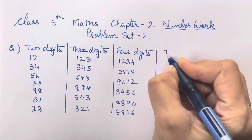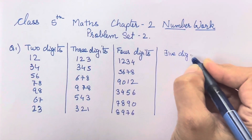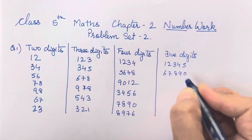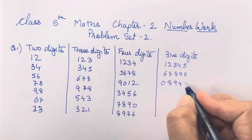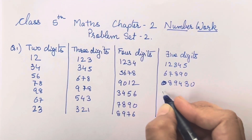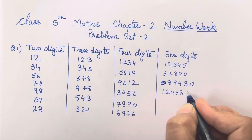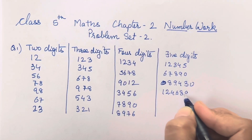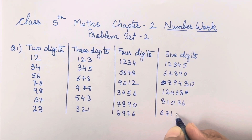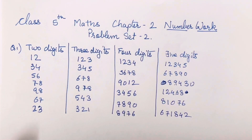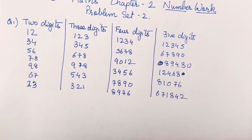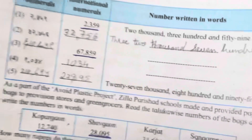Next we will write five-digit numbers. Here are a few examples - you all can write any numbers of your choice. For example: 12345, 67890, 08943 - no, we won't start with zero - so numbers like 12345, 12466, 81234. So in this way you can write 2-digit, 3-digit, 4-digit, and 5-digit numbers. Make sure you are not repeating any digits.